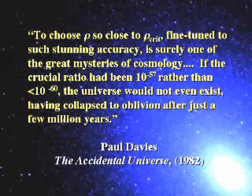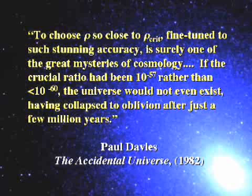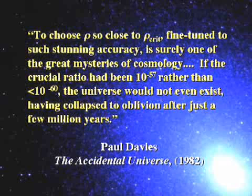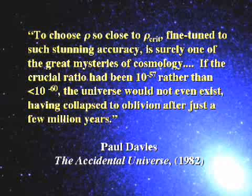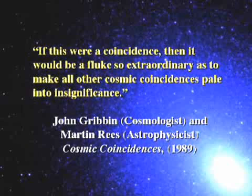Paul Davies writes: Rho is the amount of matter in the universe; rho critical is the exact amount needed to have the universe we live in. To choose rho so close to rho critical, fine-tuned to such stunning accuracy, is surely one of the great mysteries of cosmology. If the crucial ratio had been 10 to the minus 57th rather than 10 to the minus 60th, the universe would not even exist. Cosmologists John Gribben and Martin Rees add: it would be a fluke so extraordinary as to make all other cosmic coincidences pale into insignificance.